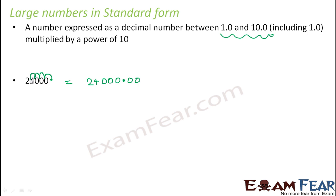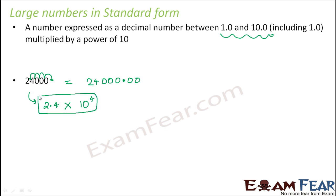We shift the decimal point 4 jumps so that it becomes 2.4, and then we multiply it by a power of 10. How many jumps have we taken? The point was at the end, and we took 1, 2, 3, 4 jumps — so it will be 10 to the power 4. So the standard form of this number is 2.4 × 10⁴.